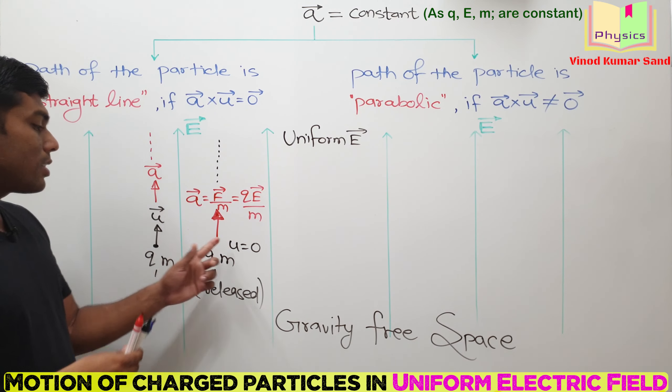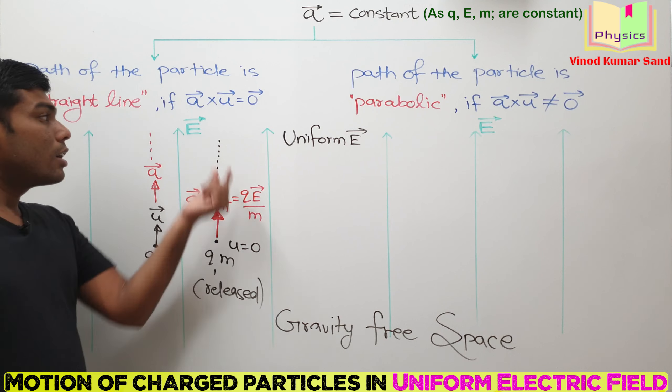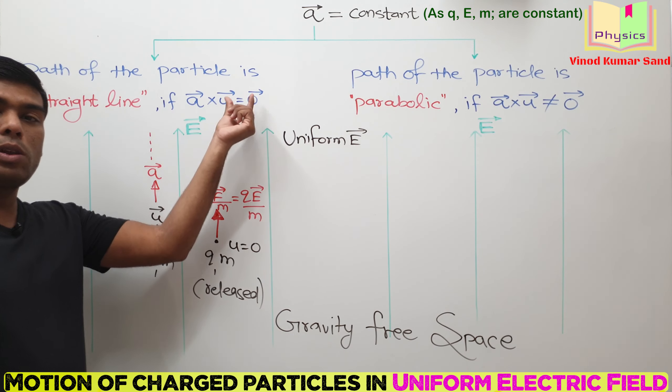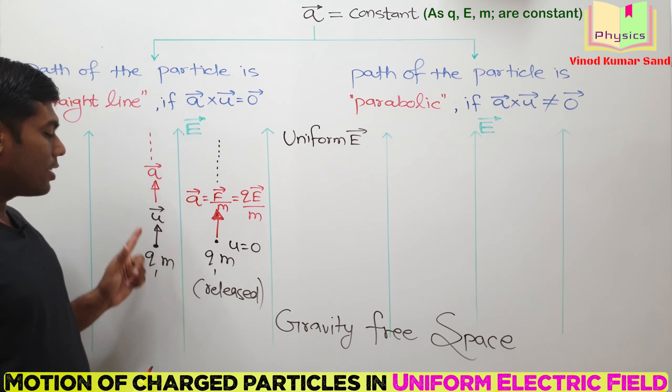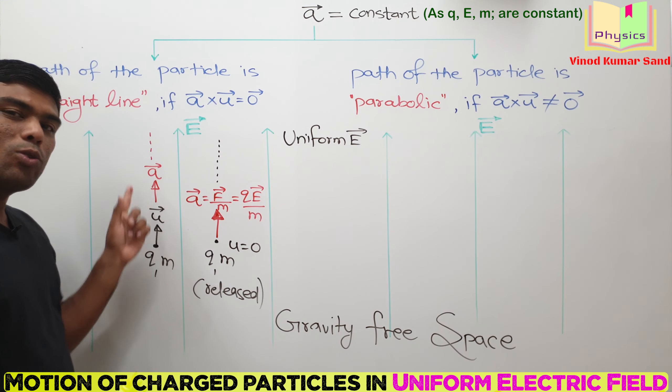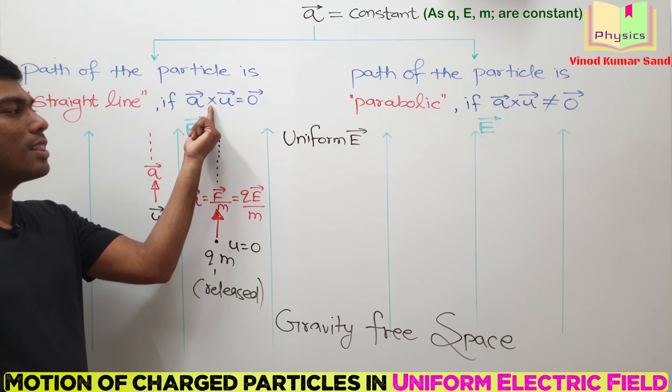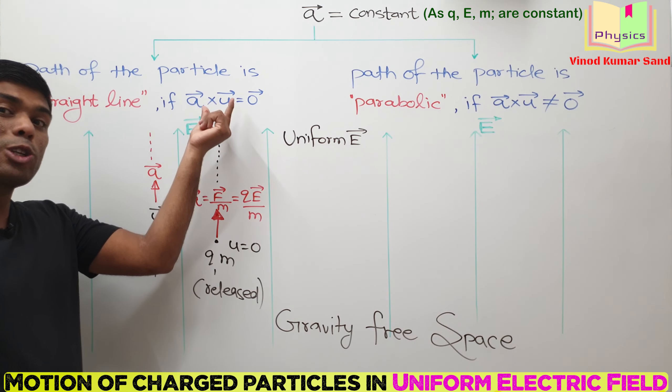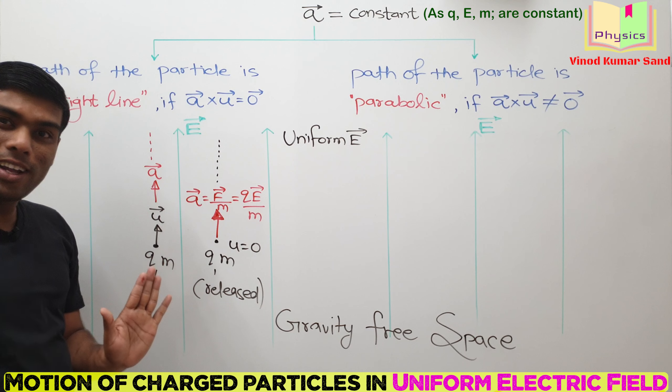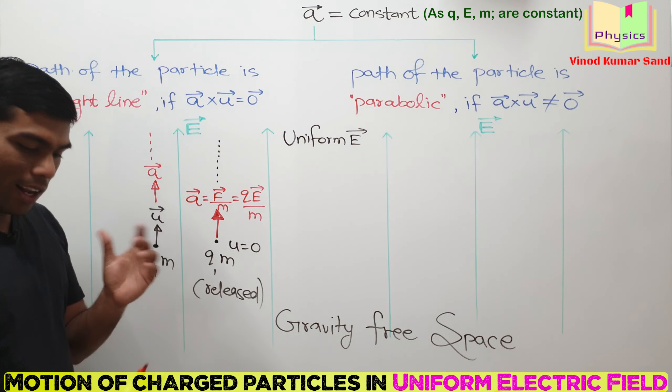Now these things can be verified using this trick. For this case, U is zero, so A cross U will become zero, so the path of particle is straight line. For this case, what is the angle between A vector and U vector? Zero degree. And if angle is zero degree, then what you will get as the cross product? In the cross product, when you put sine zero degree, the final answer will become the null vector. So the path of this particle is also straight line.